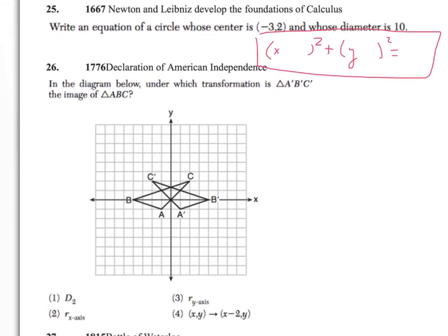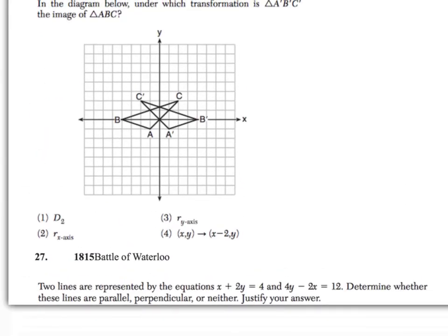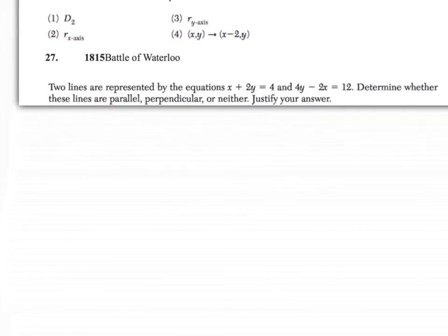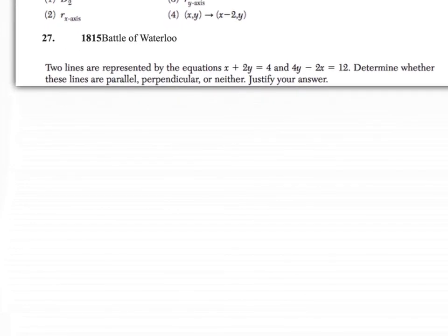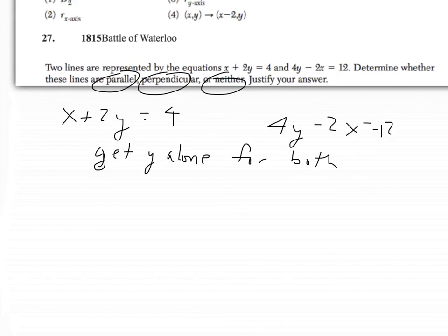Question 26 is showing a reflection — I'll let you figure that one out since it's flipped. For question 27, they want you to discover whether two equations are parallel, perpendicular, or neither. Your best bet is to take each equation and get y alone, then compare the slopes. Treat it as two separate questions. The coefficient in front of x will tell you if they are parallel, perpendicular, or neither.